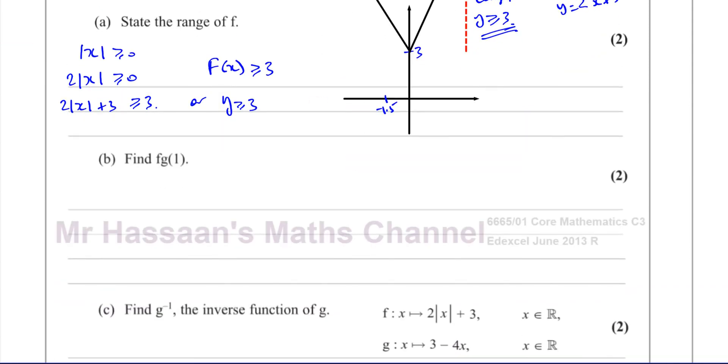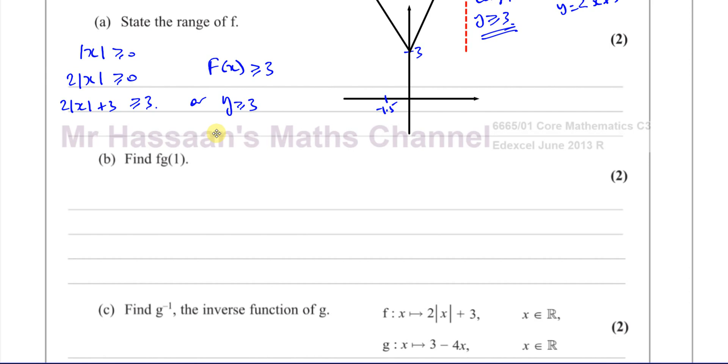Now 4 part b, it says find fg of 1. So we have the function f and g. So basically what it means is find what you get when you put g1 inside f. So you put 1 inside g, 1 goes inside the function g, and then whatever comes out of that goes inside the function f. So we can say it's f, and then you're going to put 1 inside function g. So it's f of 3 minus 4 times 1. So this is g1 here.